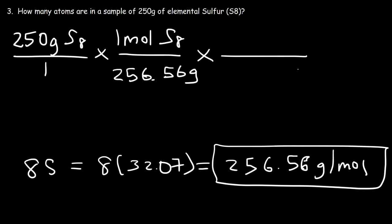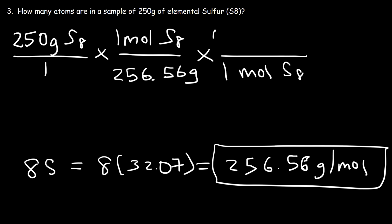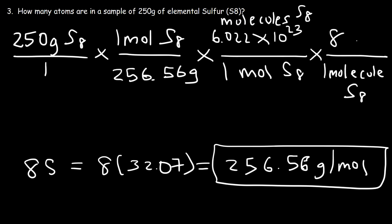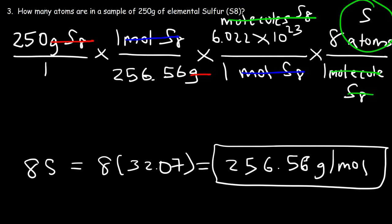Once you have the moles of a substance, you can convert it to atoms or molecules. But is S8 an atom or a molecule? S8 is a molecule — a particle that contains many atoms, which can be the same type or different atoms. So first, we need to convert moles of S8 into molecules of S8 using Avogadro's number. One mole of S8 has 6.022 times 10 to the 23 molecules of S8. Now, a single molecule of S8 contains eight atoms of sulfur. So the unit moles of S8 cancels, and molecules of S8 cancels, leaving behind just atoms of sulfur.